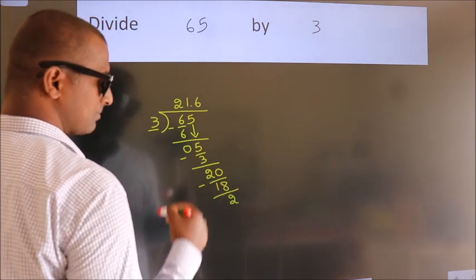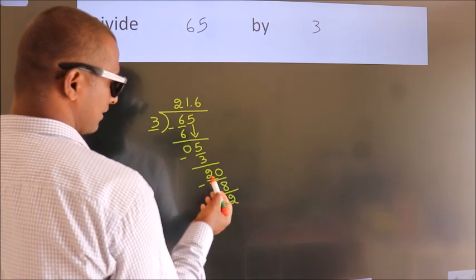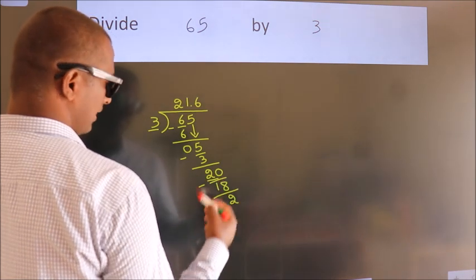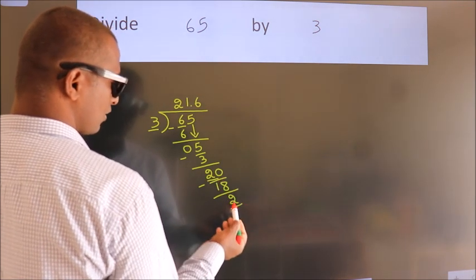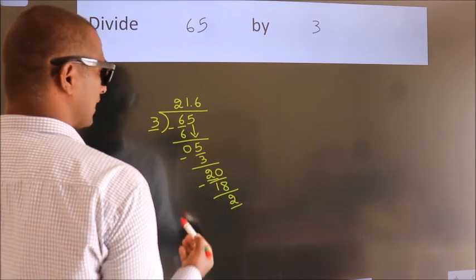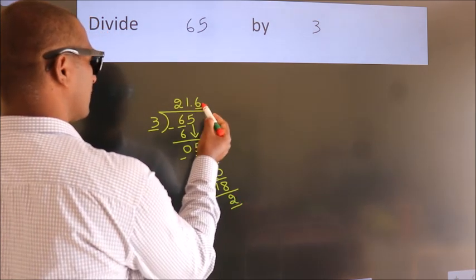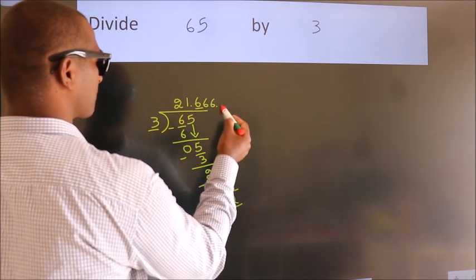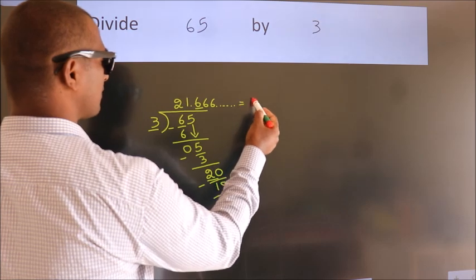Now you observe: we had 2 here, and we got 2 again. That means this number keeps on repeating. So this is our quotient.